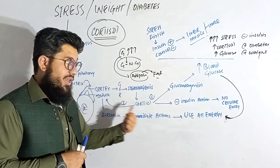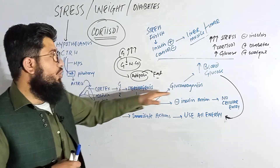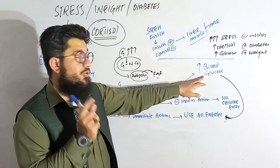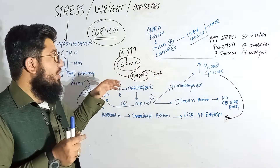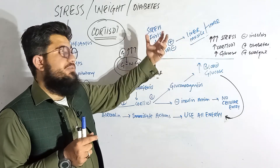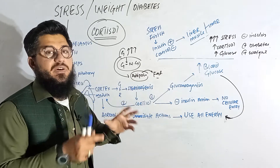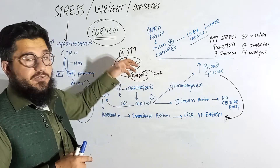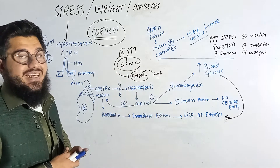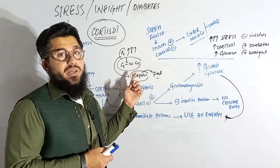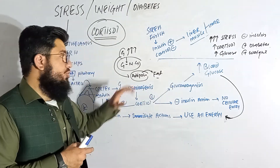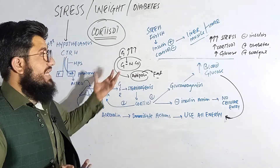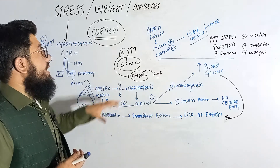To summarize the weight gain mechanism: stress increases cortisol, gluconeogenesis occurs, insulin action is lost, and the glucose level remains high in the blood. That glucose is not taken up by cells, so there is no glycogen storage in the liver, muscles, or other cells. Instead, this unused glucose diffuses into adipose tissues and is directly converted into fat, causing weight gain and obesity.